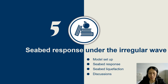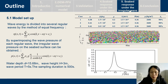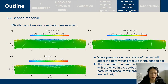The next part is the seabed response under irregular waves. Here we give the model setup. We simulated irregular wave propagation for three cases with different seabed parameters. Here is the wave spectrum, and this is the seabed model. Here is the seabed response, showing the distribution of the pore water pressure field. We can see that the wave pressure on the surface of the seabed affects the pore water pressure.